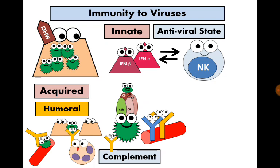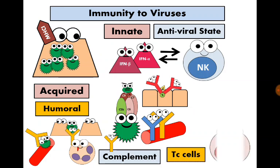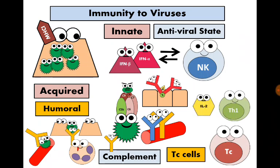These are immunoglobulin G and immunoglobulin M functions. Also, immunoglobulin A neutralizes viruses on mucosal surfaces, preventing them from attachment to cells. T-cytotoxic cells kill virally infected cells. T-helper-1 cells secrete interleukin-2, which activates T-cytotoxic cells and natural killer cells, and interferon-gamma, which also activates natural killer cells.